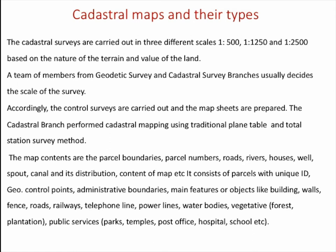The new scales are 1:500 for urban areas, 1:1250 for less urban areas, and 1:2500 for open and cultivated areas. The scale is decided by a member from the geodetic survey and cadastral survey branch. The cadastral branch performs cadastral mapping using traditional plane table, now transformed to total station survey method. The map contains parcel boundary, parcel number, roads, rivers, houses, wells, and other features with unique parcel ID, administrative boundary, and public and private features like building walls.